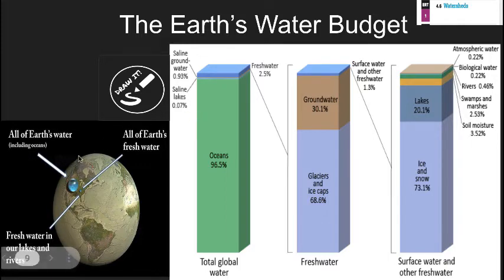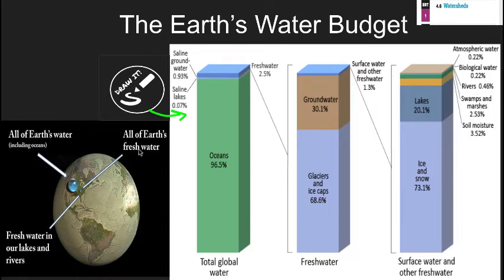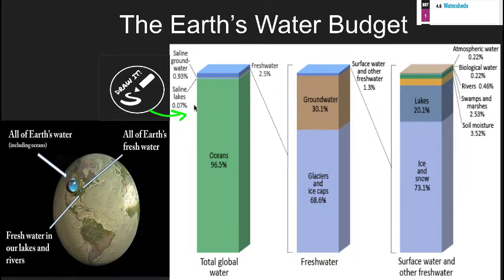So first we have a drawout here. As I start clicking through this graph, we're going to talk about the Earth's water budget — how much fresh water is available to us. This is a unique diagram. We start looking at all the Earth's water, including oceans, represented on this globe. Then you look at the amount of fresh water available — this tiny little dot — and fresh water in our lakes and rivers is not even visible. Just trying to show how little fresh water is available.